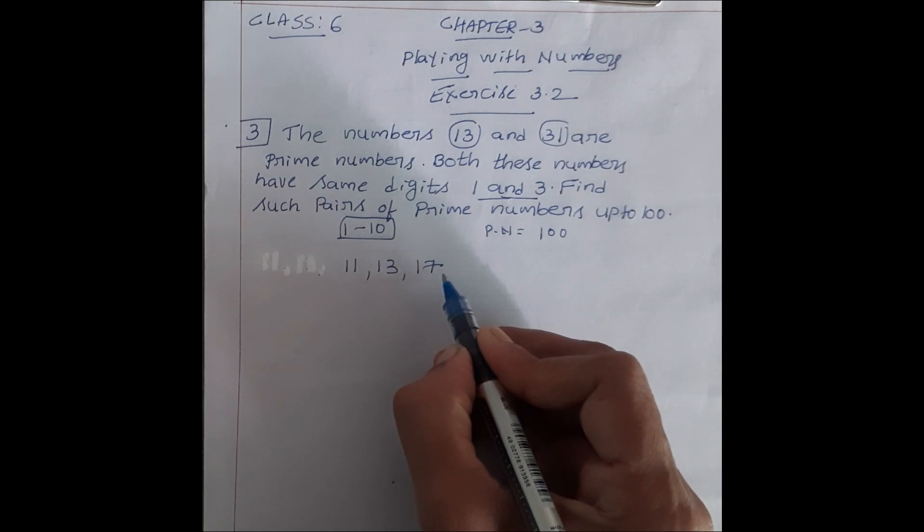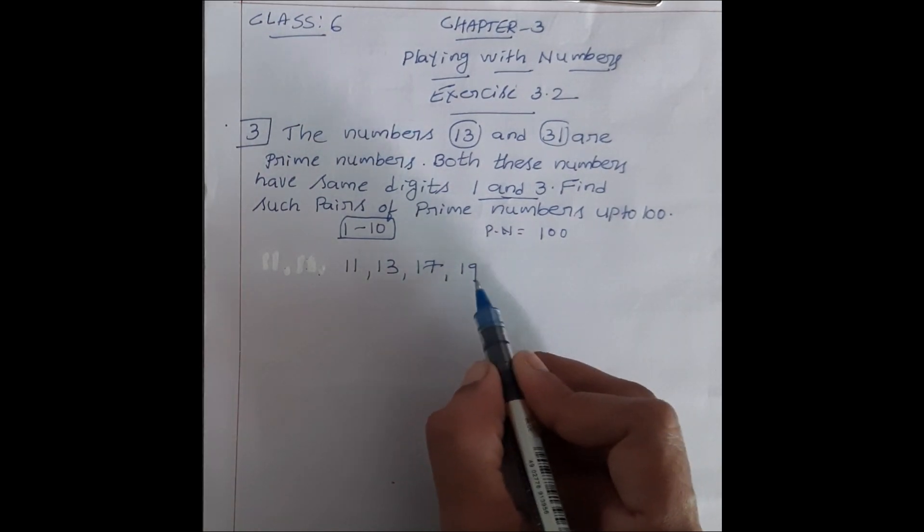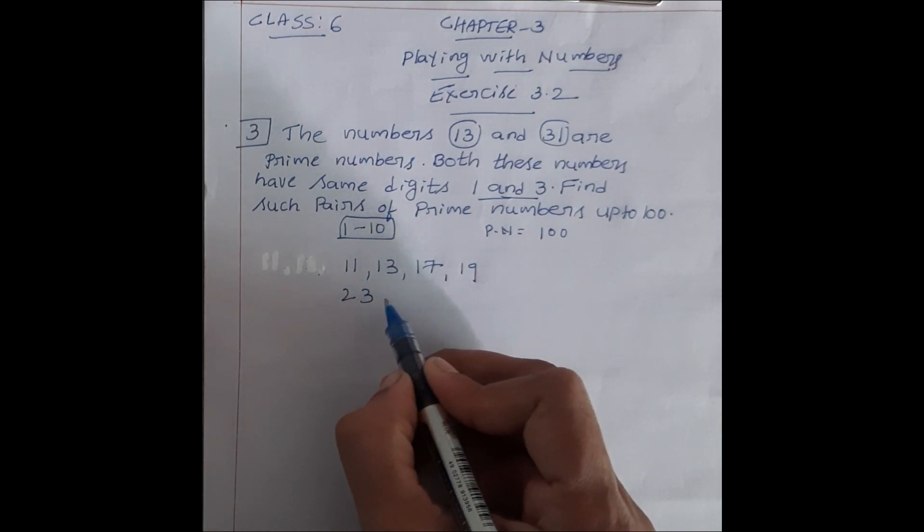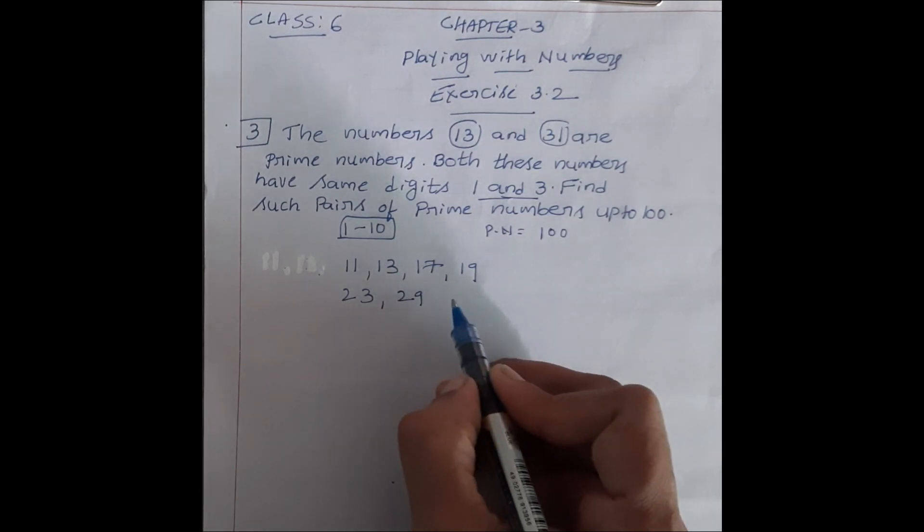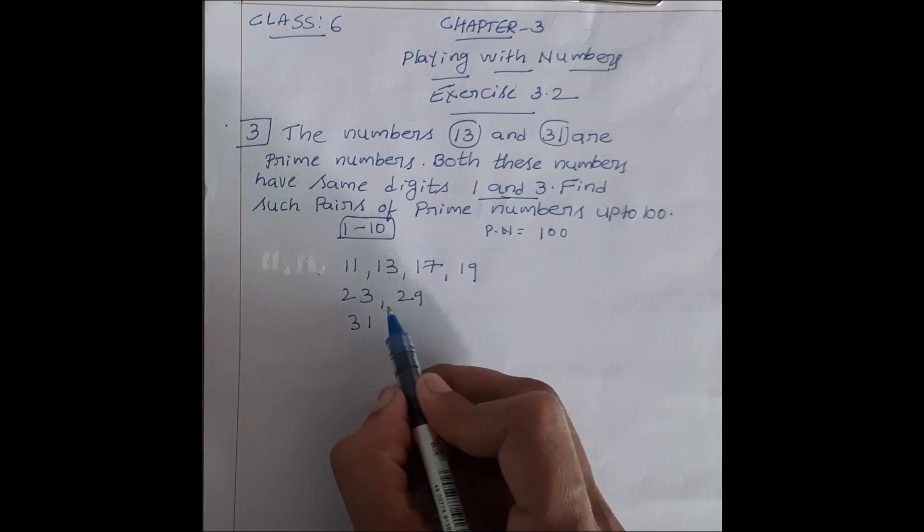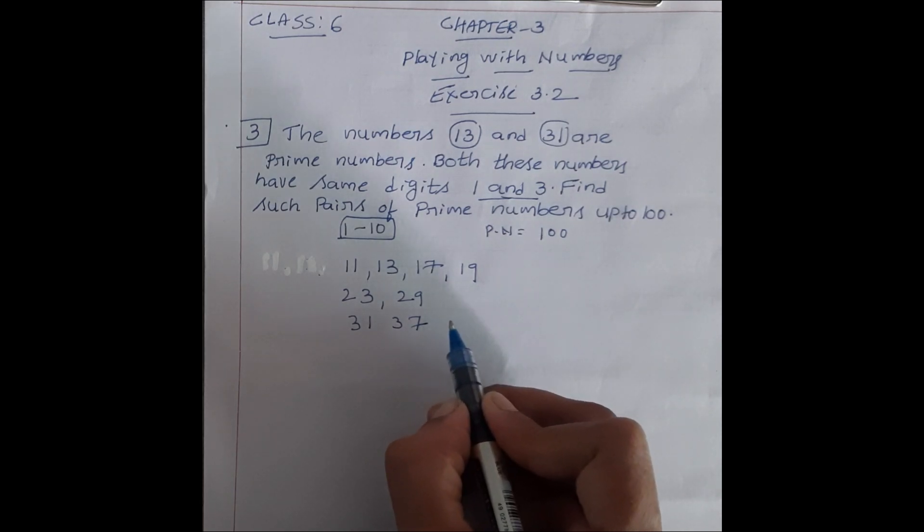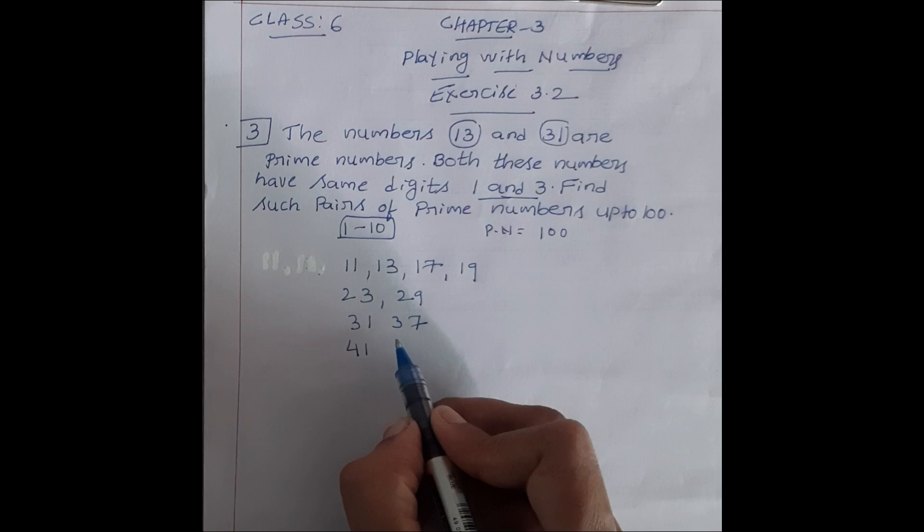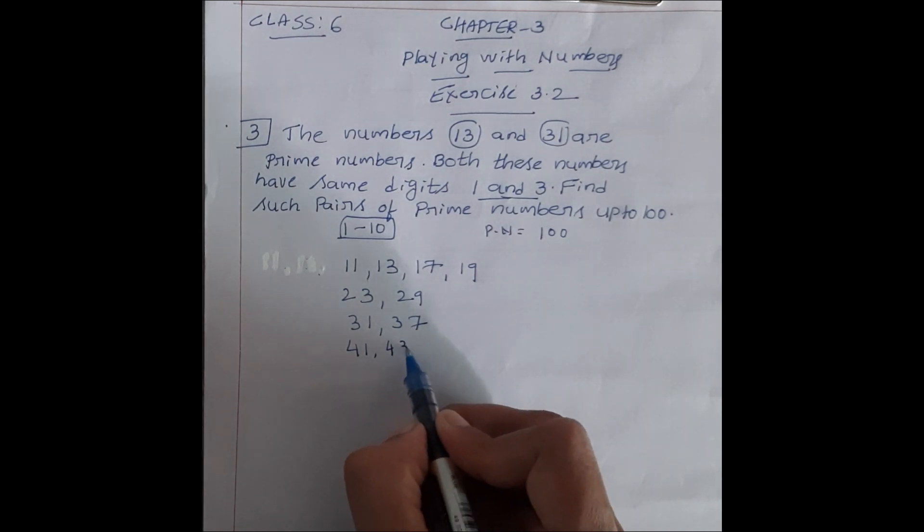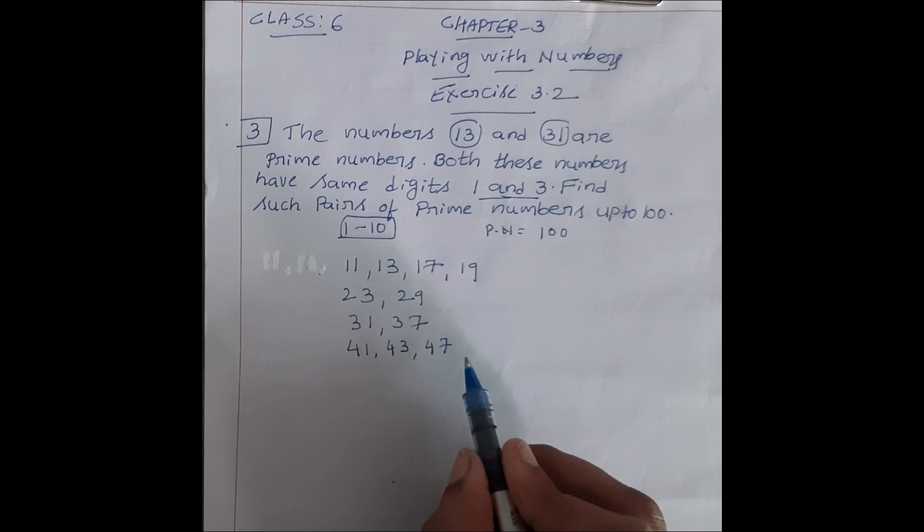17 prime number hai, 18 prime number nahi hai, 19 prime number hai. Next 20 prime number nahi hai, 21 bhi nahi hai, 22 bhi nahi hai, 23 prime number hai, 24 nahi hai, 25 nahi hai, 26 bhi prime number nahi hai, 27 bhi nahi hai, 28 bhi nahi hai, next 29 prime number hai.